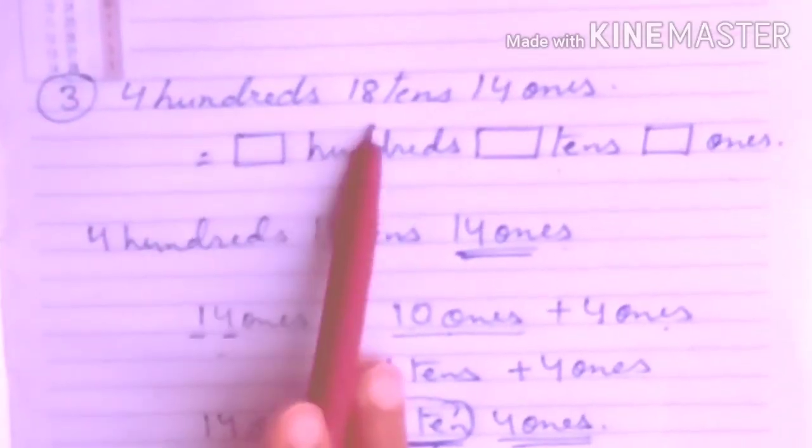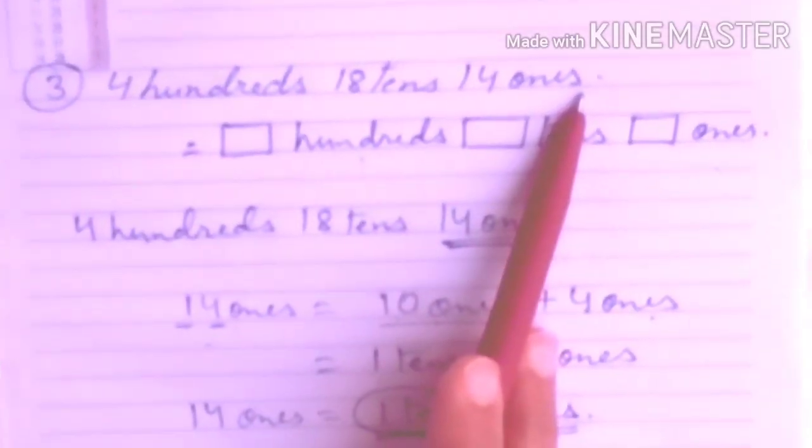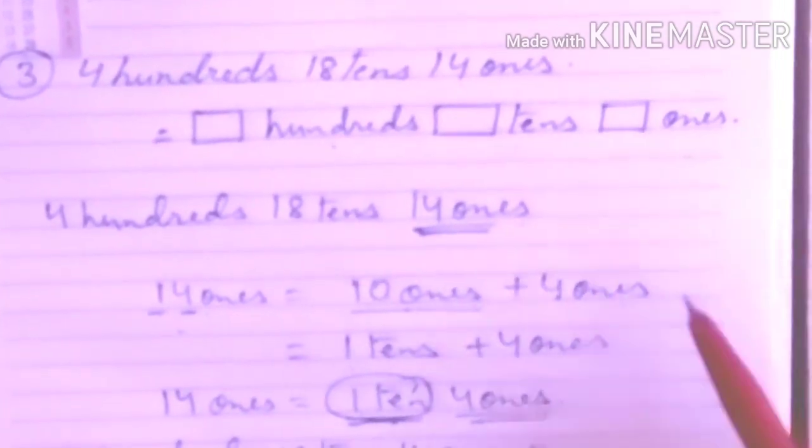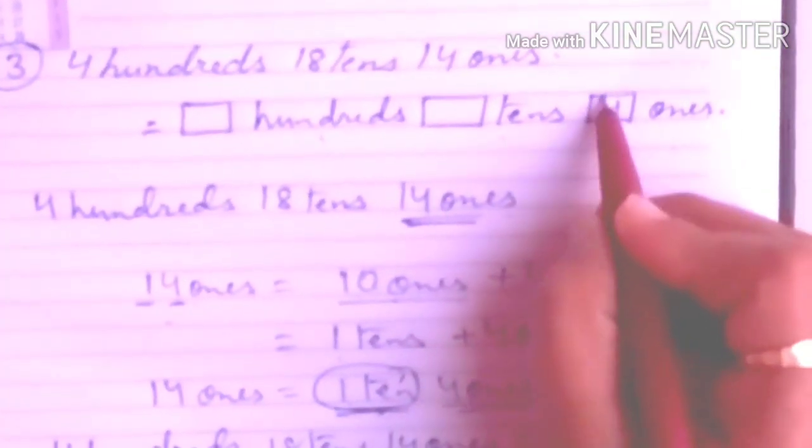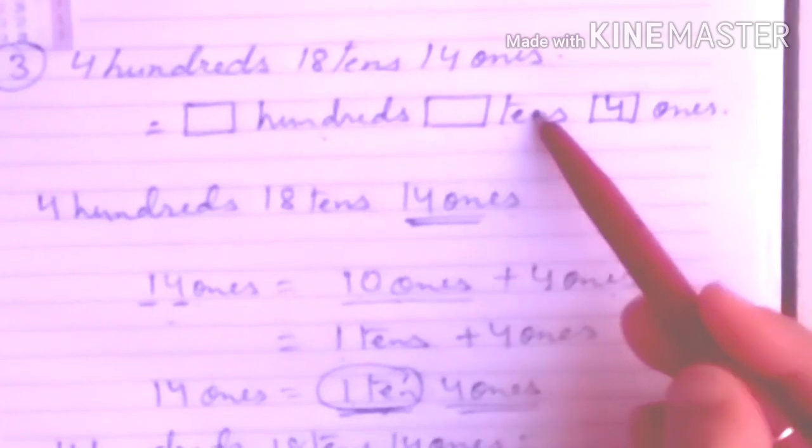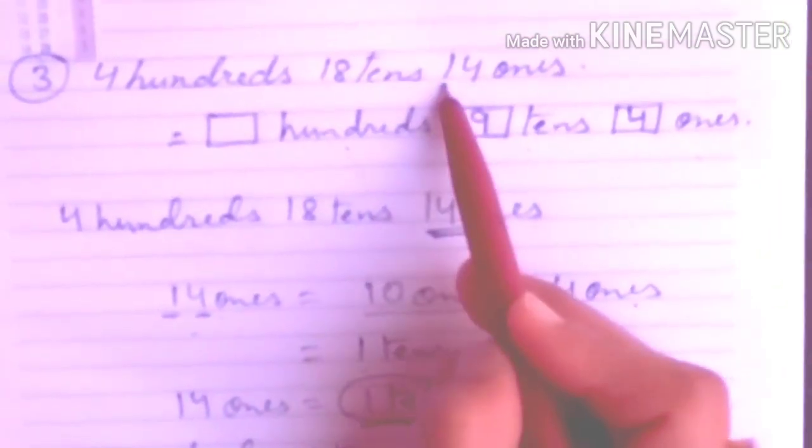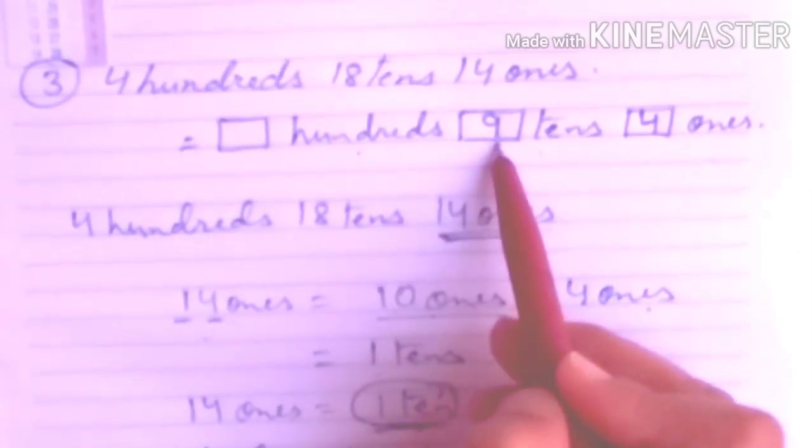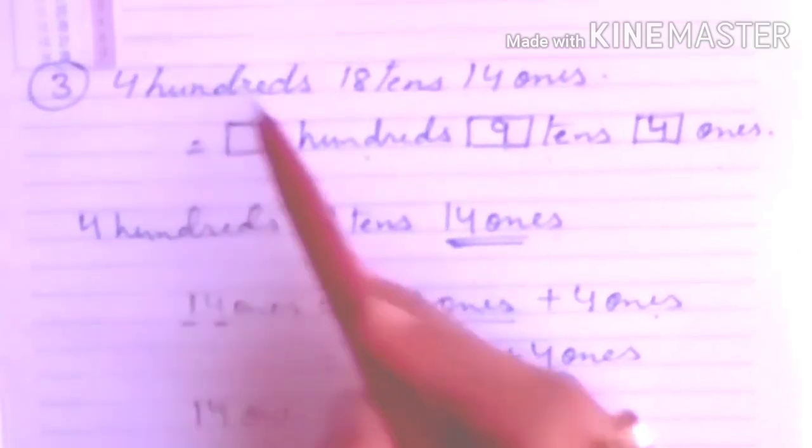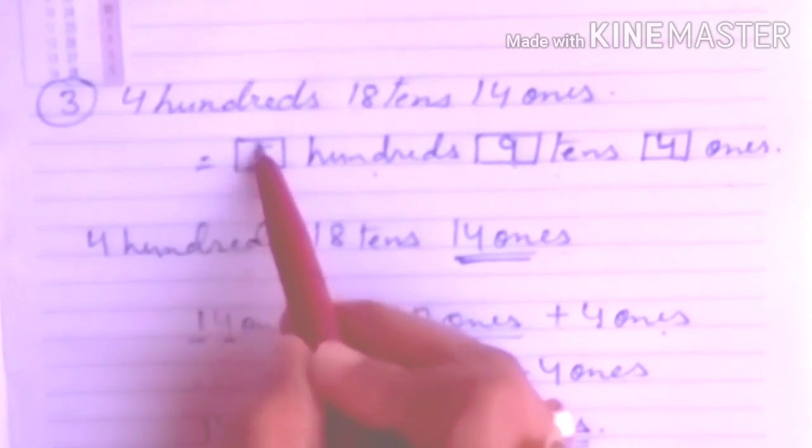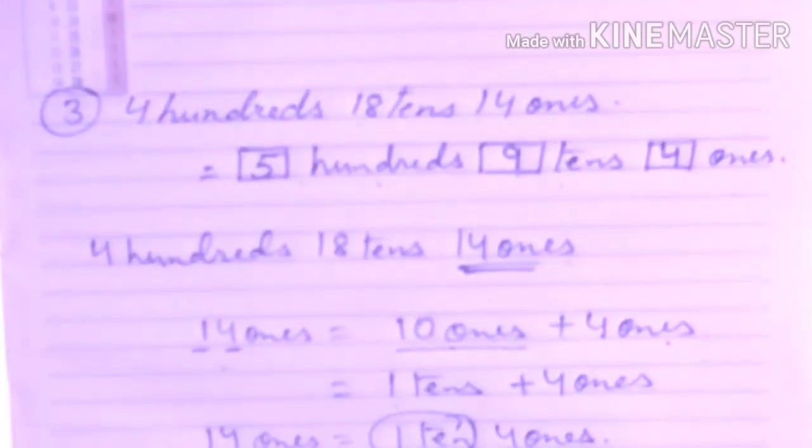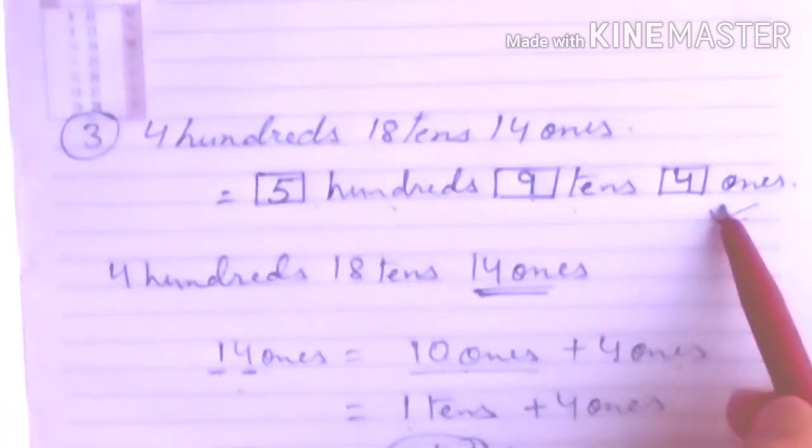So in this way, if we look at the starting question, 4 hundreds, 18 tens, 14 ones equals to what we got at last? What remained with us? 4 ones. And in the tens place what remained? 9 tens. And in the hundreds place? The 1 hundred got added to the 18 tens, 9 tens remained, and 1 went to the hundreds place. So 5 hundreds. Okay? So in this way we can solve any question.